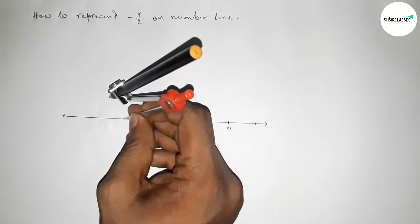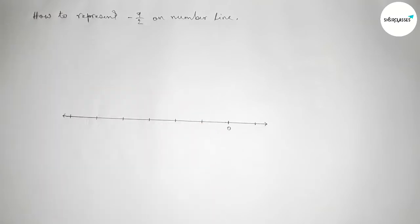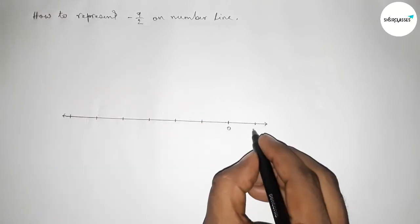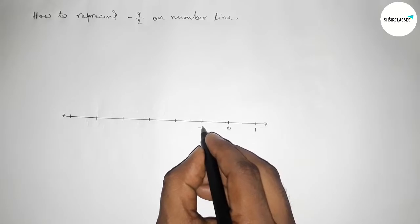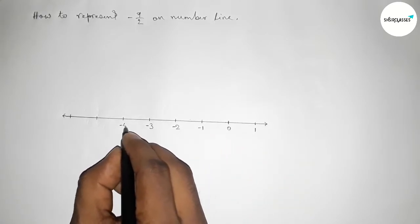Okay, so this side here one and this side minus one, minus two, minus three, minus four, minus five, minus six and continuous.